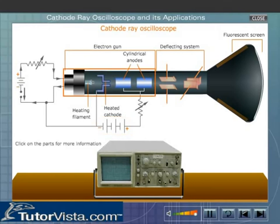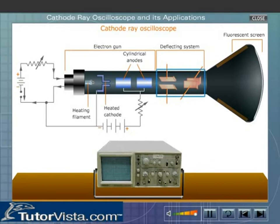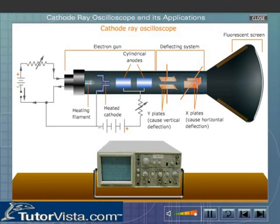The deflecting system consists of two pairs of plates, X and Y. The Y plates are placed horizontally to bring about vertical deflection. The X plates are placed vertically to bring about horizontal deflection.